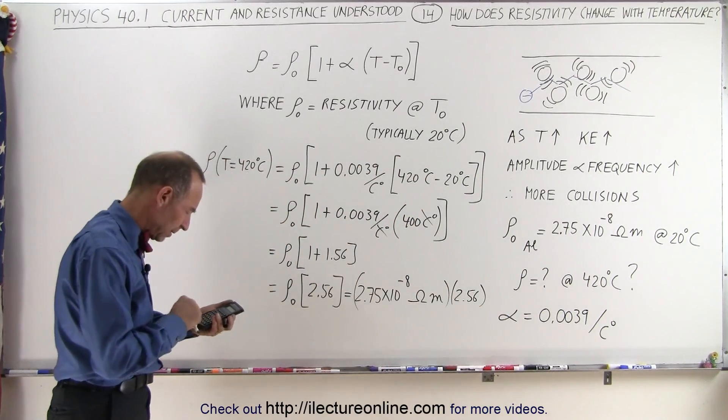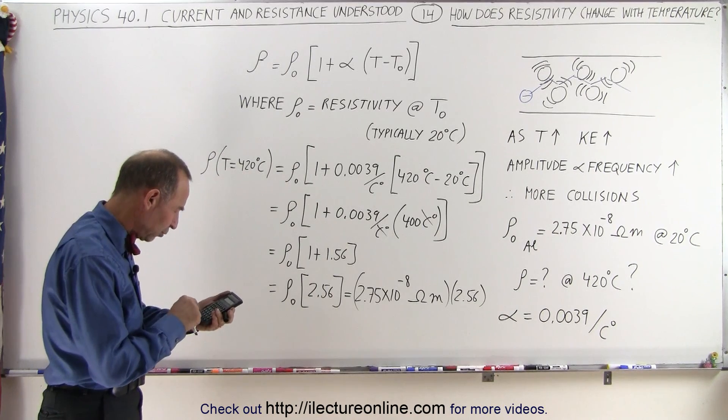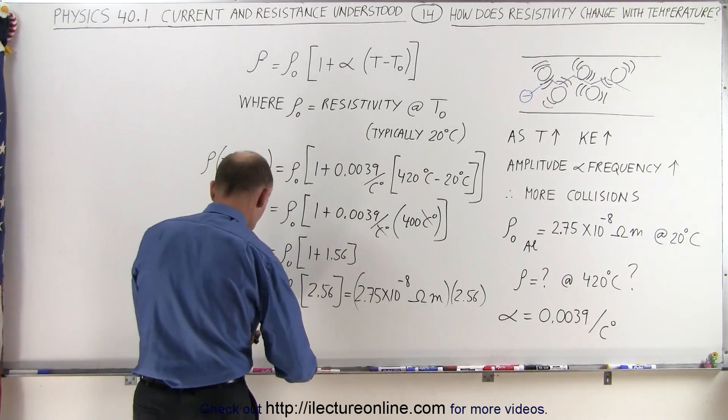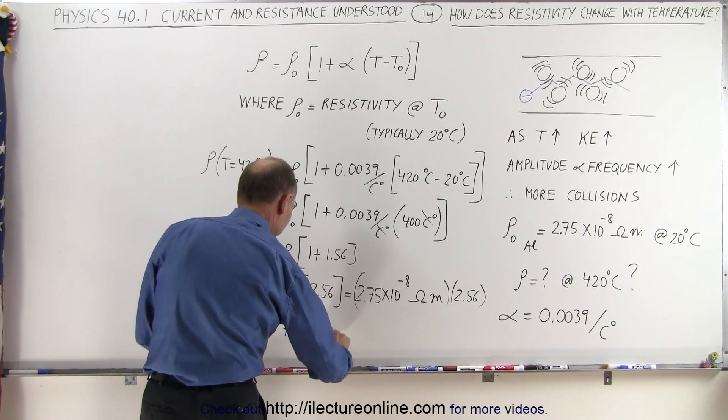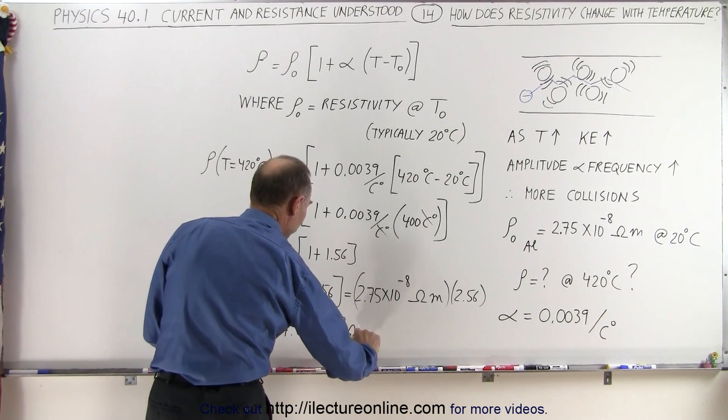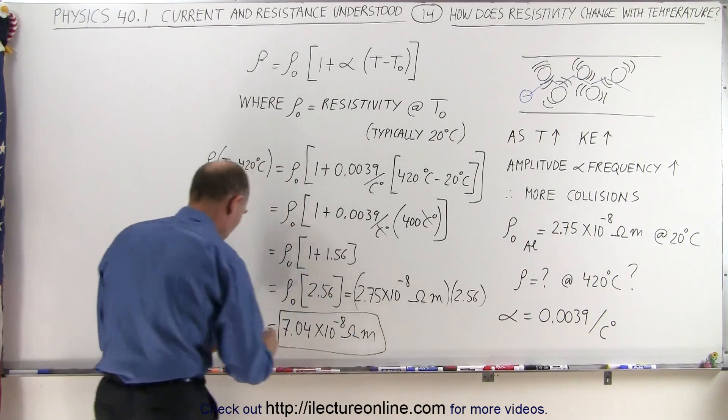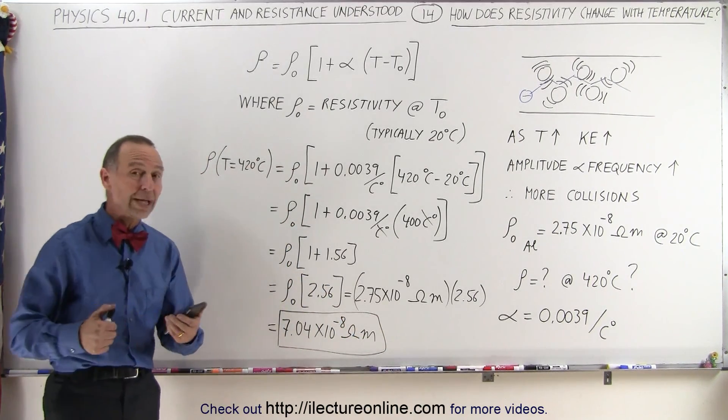So that would be equal to 2.75 times 10 to the minus 8 ohms times meters multiplied times 2.56, which would be equal to 7.04 times 10 to the minus 8 ohms times meters.